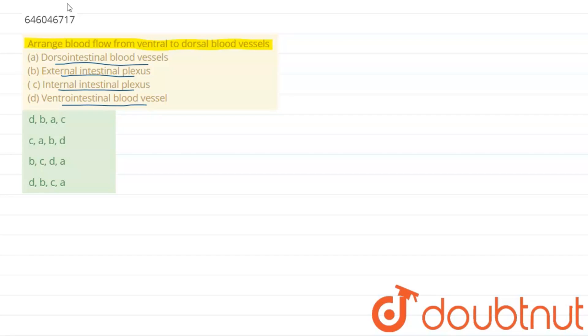The order and path of blood flow from the ventral to dorsal blood vessel—we will discuss the order of blood flow from the ventral to the dorsal blood vessel. It starts with the ventral-intestinal blood vessel.